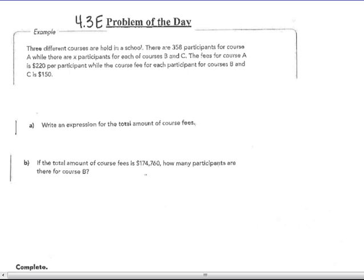Three different courses are held in a school. There are 358 participants for course A while there are X participants for each of courses B and C. The fees for course A is $220 per participant while the course fee for each participant for courses B and C is $150.